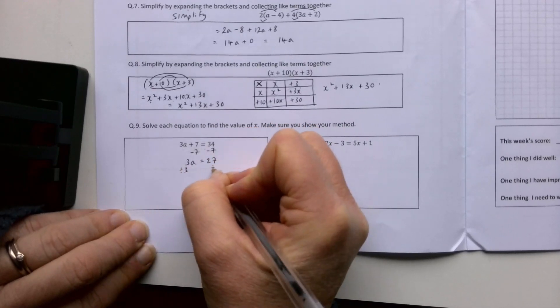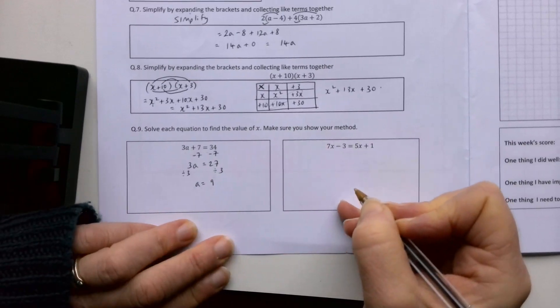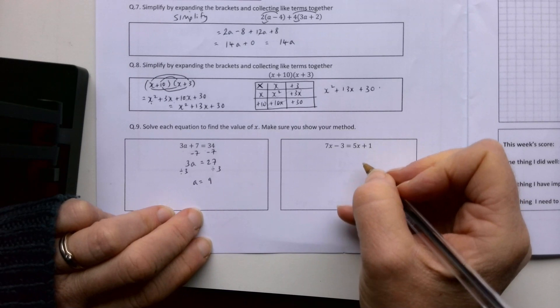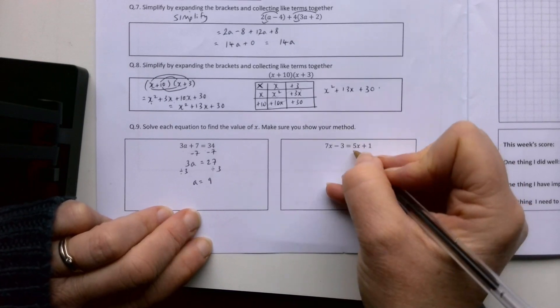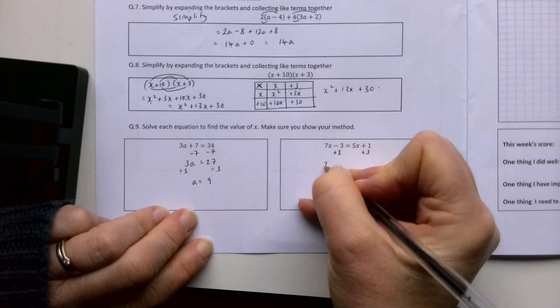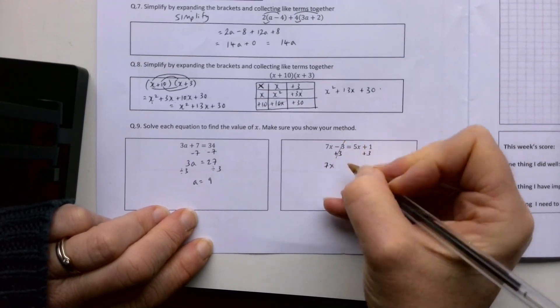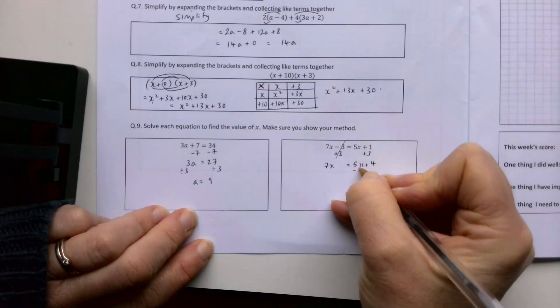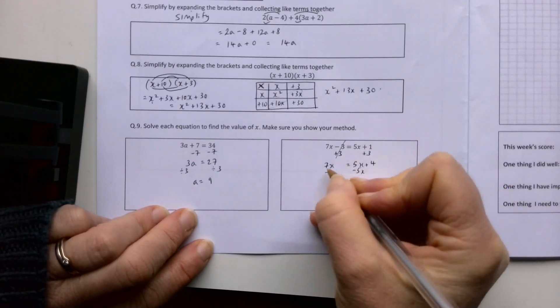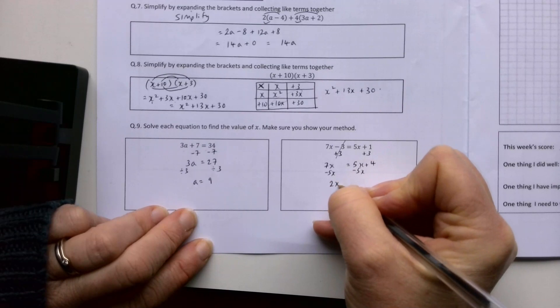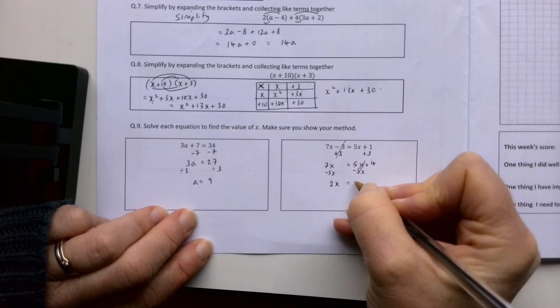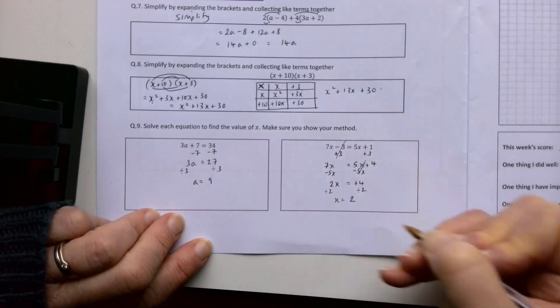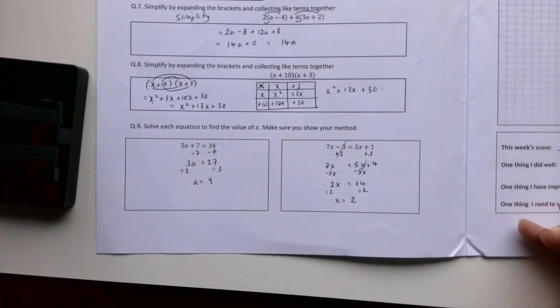7x minus 3 equals 5x plus 1. Remember, x's on one side, numbers on the other. I'm going to add 3 to both sides first. 7x equals 5x plus 4. Then subtract 5x from each side because I want x only on this side. So 2x equals 4. Now I want to find out what 1x is: 2x is 4, so 1x is 2.